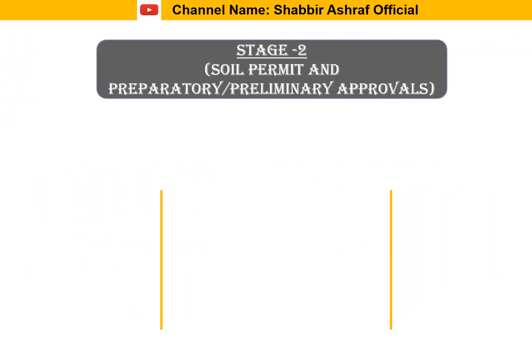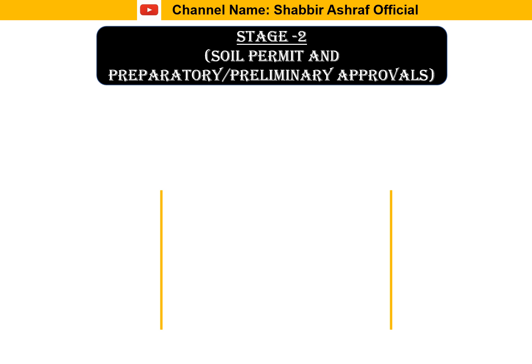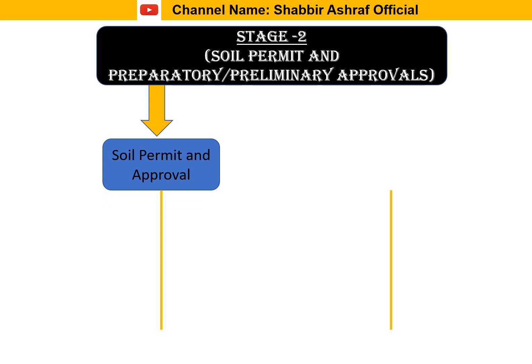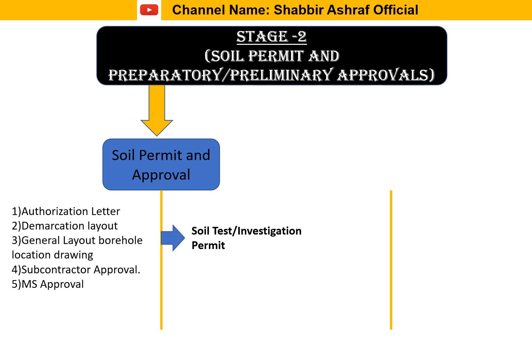Once stage one is complete, we move to stage two, which covers soil test permit and preliminary approvals. For the soil test permit, we require documents including authorization letter, demarcation layout, general layout, board location drawing, subcontractor approval, and method statement approval. We upload these to the municipality portal, receive the soil test investigation permit — a process taking about one week — then the subcontractor conducts the soil investigation test, which takes three to four days. We then receive the soil test report.